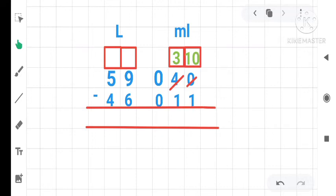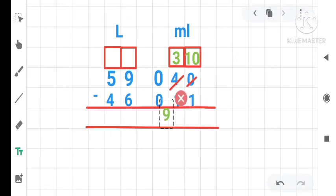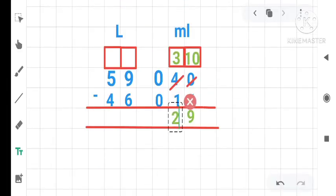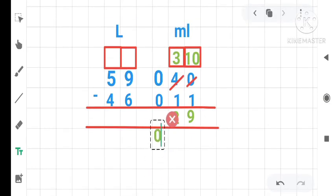It means we need to subtract this 1 from 10. So let's subtract. Now we need to count after 1 till 10. So let's count 2, 3, 4, 5, 6, 7, 8, 9 and 10. So we get 9 here. Now when we subtract 1 from 3, we get 2 here. And when we subtract 0 from 0, we get 0. Because we have to write the values of milliliter in 3 digits.